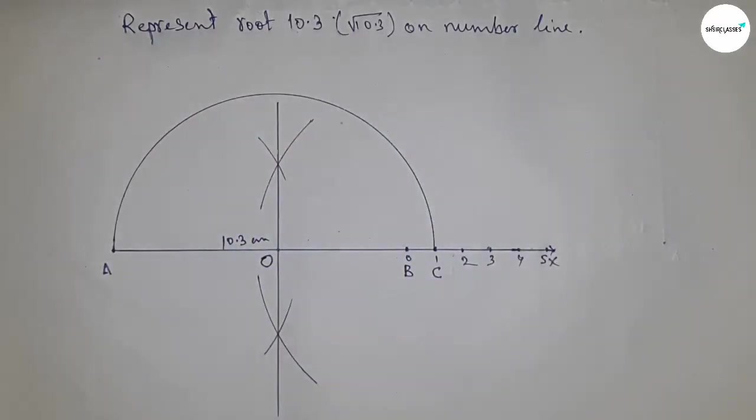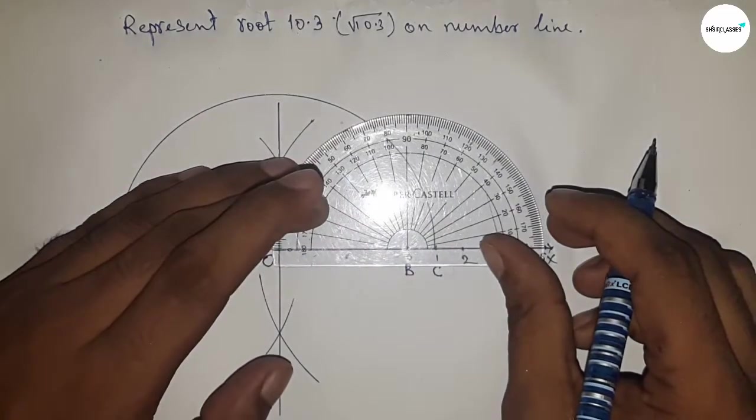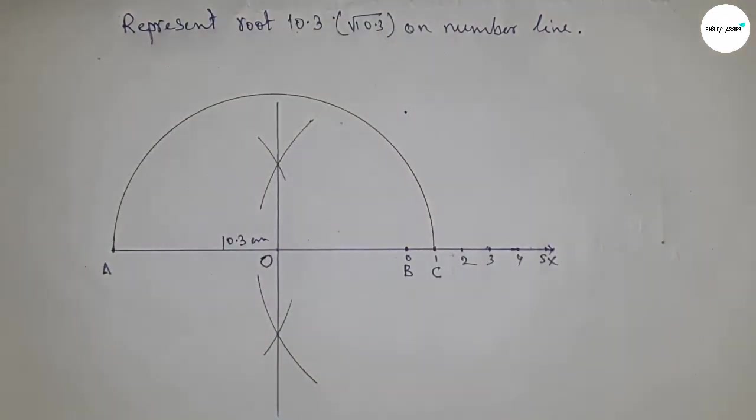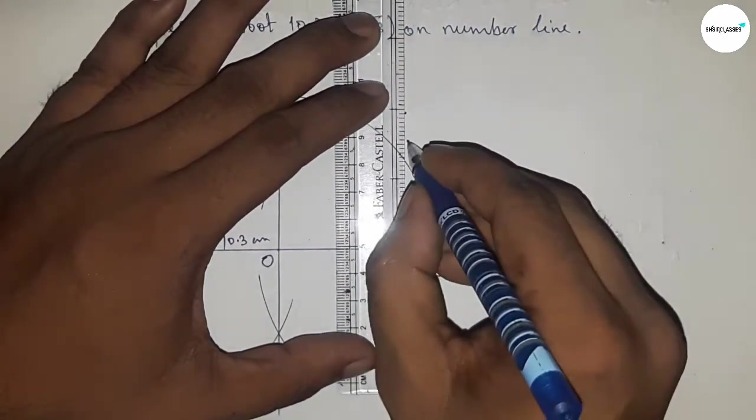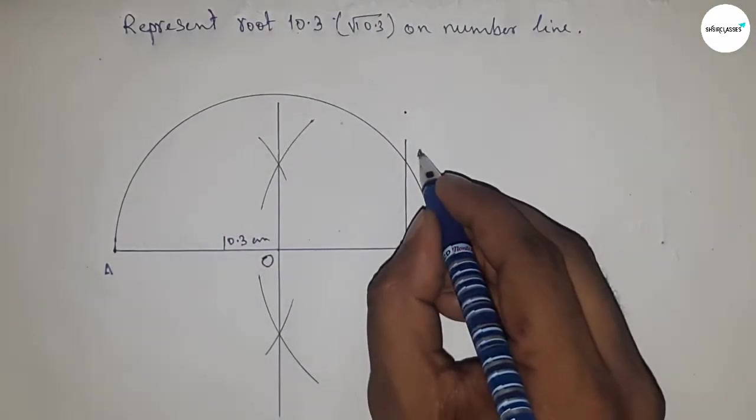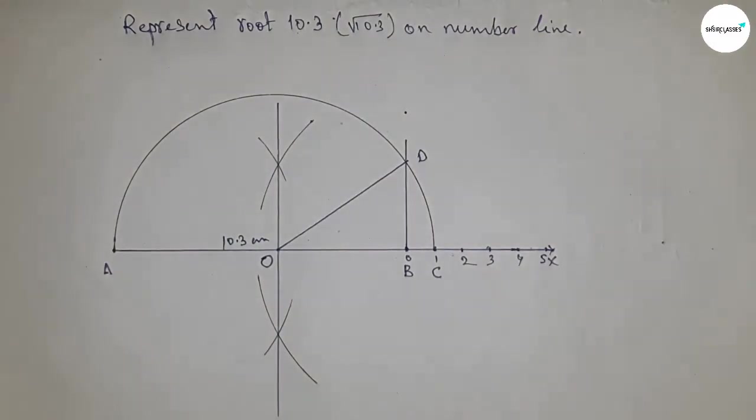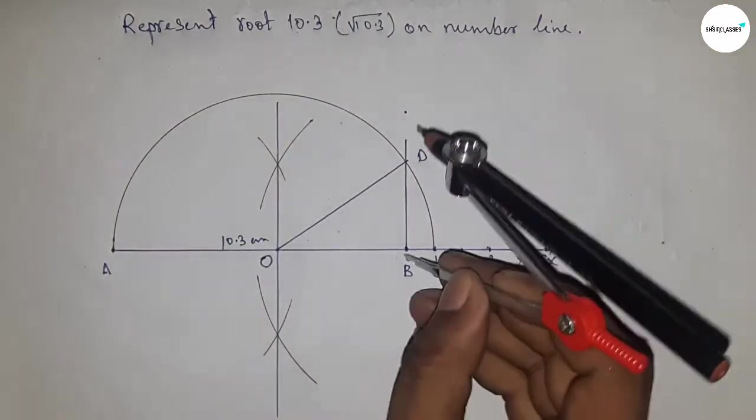Next, drawing a 90-degree angle on the point B by using protractor. So this is 90 degrees. Now joining this line which meets at point D. Next, joining O and D. Now taking the length BD by compass.